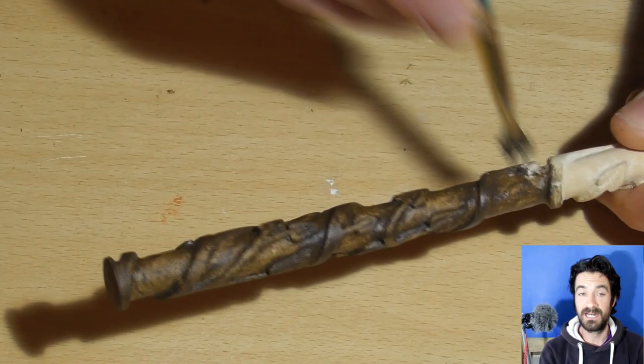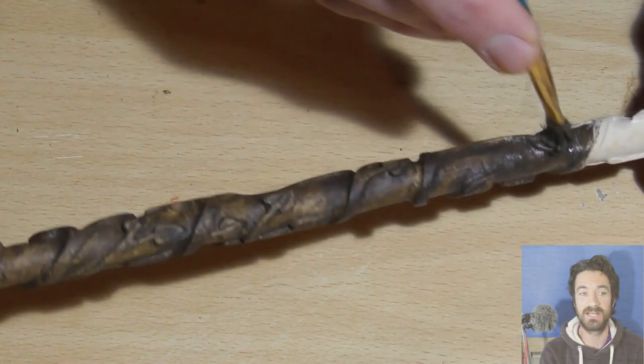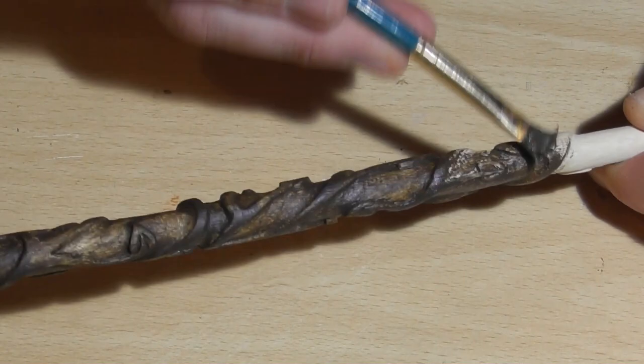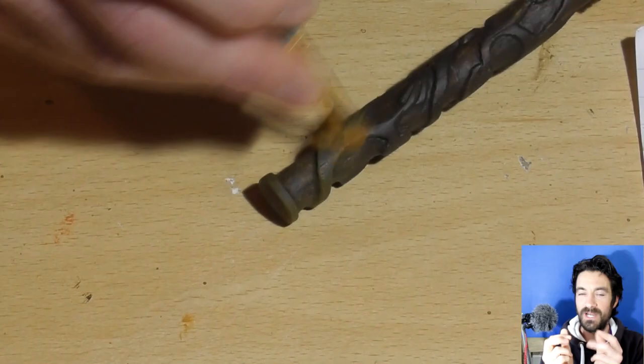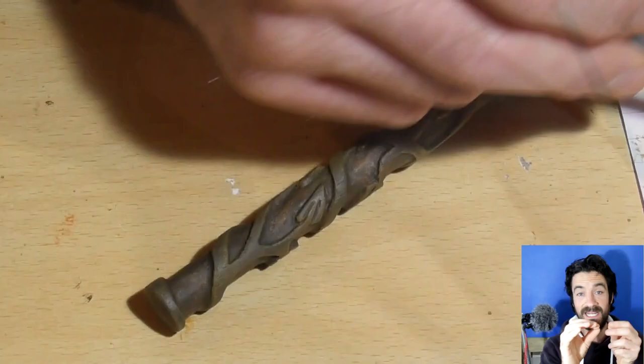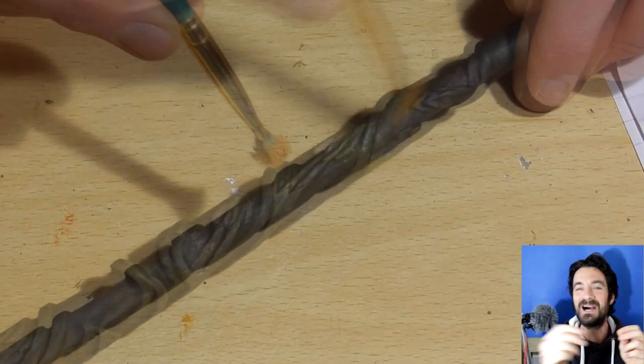Once the burnt umber paint was dry, I then went back in with raw sienna, which is a lovely bright yellowy brown color, and I dry brushed it on all of the ivy tendrils onto all of the ivy tendrils and the pieces of the stems that go up the wand. That basically made it really pop out.